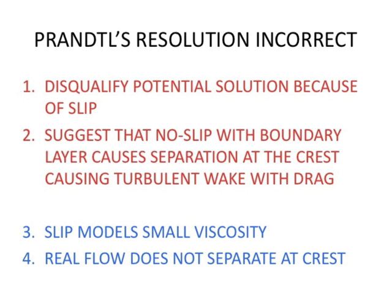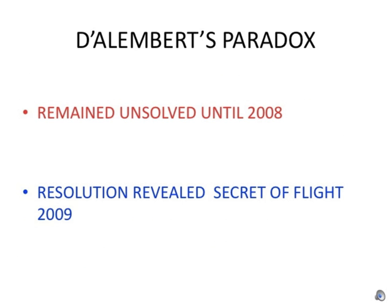However, point 1 is not correct, since slip models small viscosity. And point 2 is not correct, because real, slightly viscous flow does not separate at the crest. Prandtl's resolution of D'Alembert's paradox is thus incorrect. The correct resolution was not given until 2008, and then revealed the secret of flight.